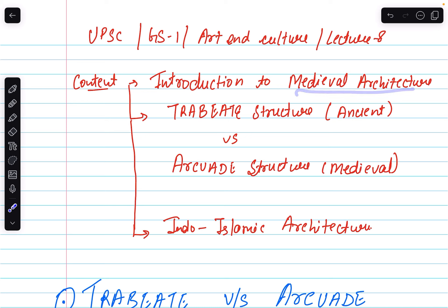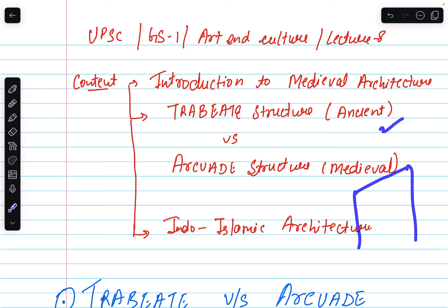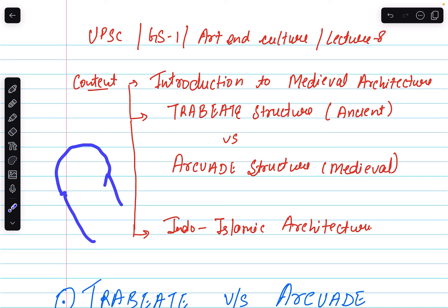The content for today is an introduction to medieval architecture. The umbrella term has a basic bifurcation: trabiate structure and arcuated structure. In ancient times we had the triangular type structure. In the arcuated structure you have the dome — including inside domes — and in medieval times changes were introduced: entrances had arcades and roofs had domes. This was the arcuated style, compared to the trabiate style we now associate with ancient structures like stupas and sculptures.